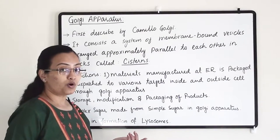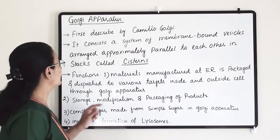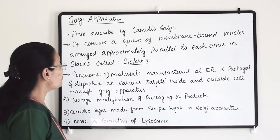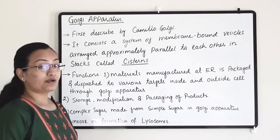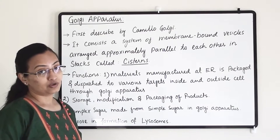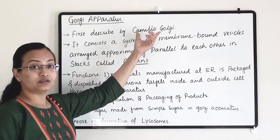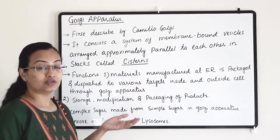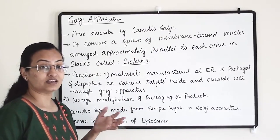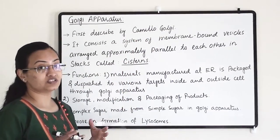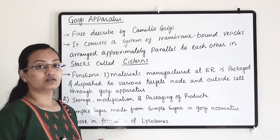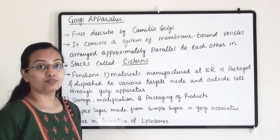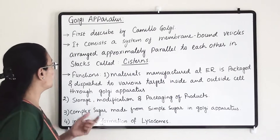Another important organelle is the Golgi apparatus. It was first described by Camillo Golgi, a scientist who first observed the Golgi apparatus, described its function, and remarked that the Golgi apparatus is an important organelle in the cell.